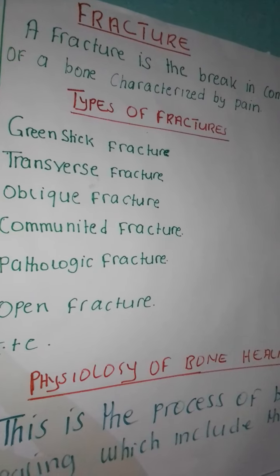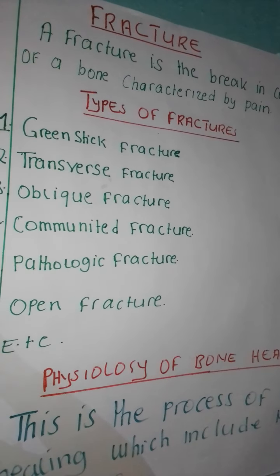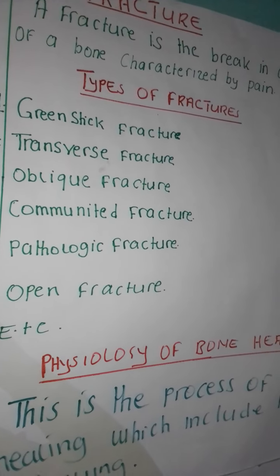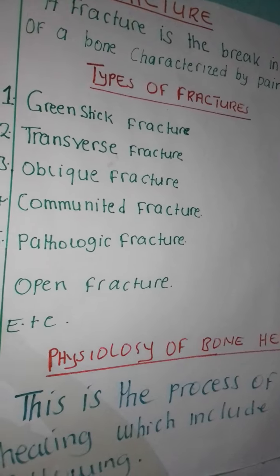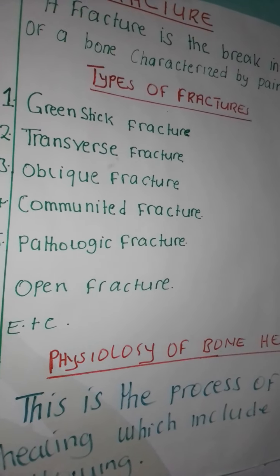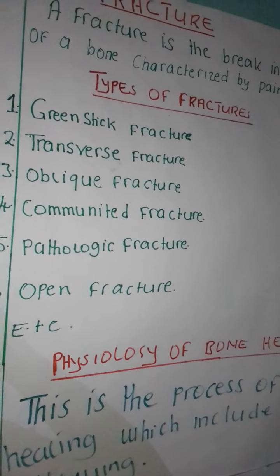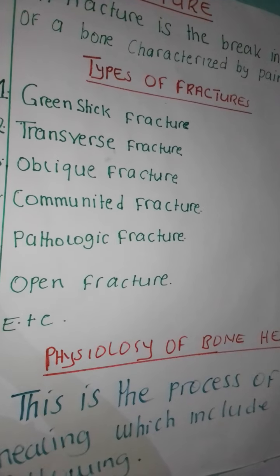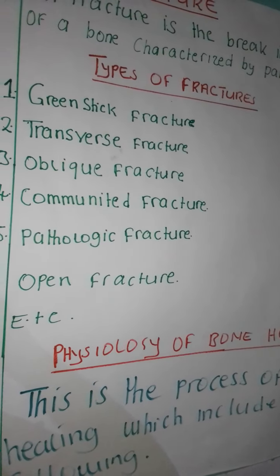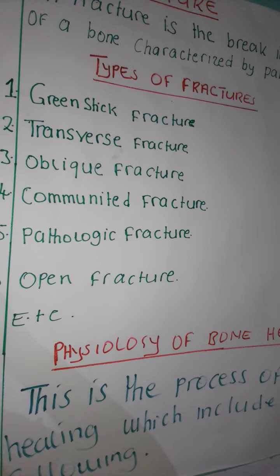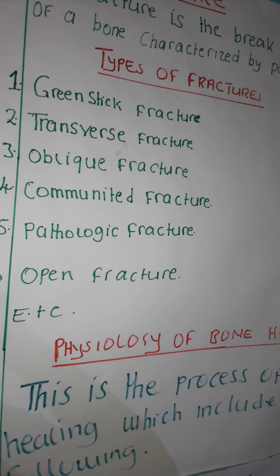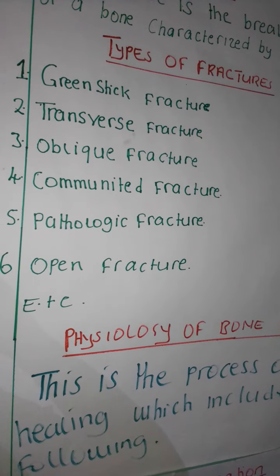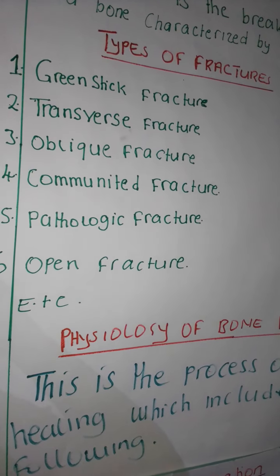What are the types of fractures? Number one: greenstick fracture — this is a fracture that is usually common in children. Number two: transverse fracture — this is a fracture that usually happens at 90 degrees to the long axis of the bone. Then you have an oblique fracture, which happens at less than 90 degrees to the long axis of the bone.